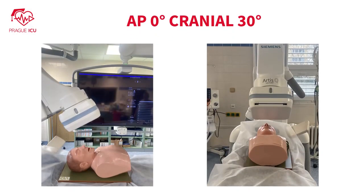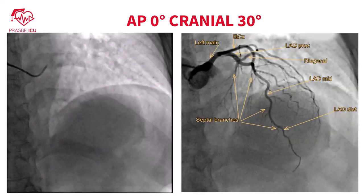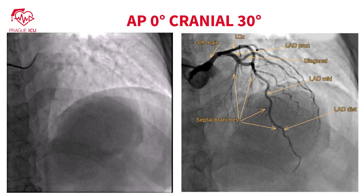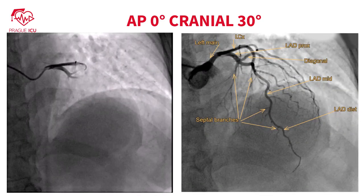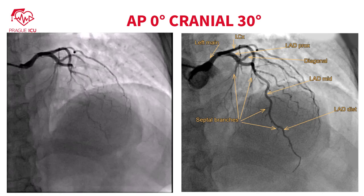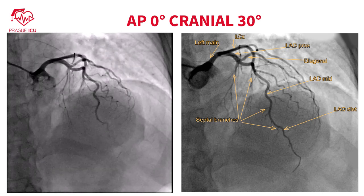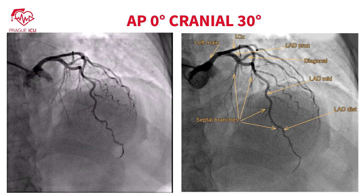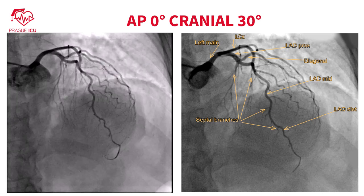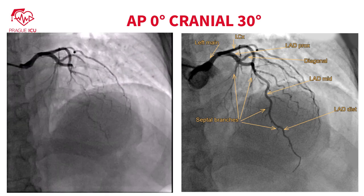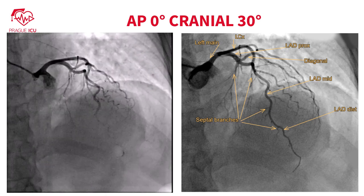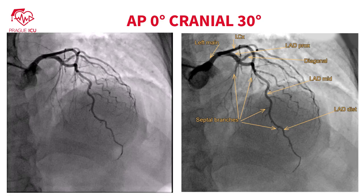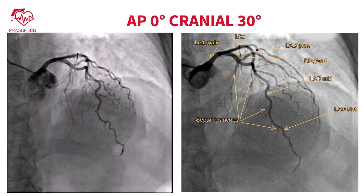AP 0 degrees cranial 30 degrees view is best for visualizing the distal part of the left main and ostium of the LAD. In major cases, the LAD goes in parallel to the spine. Diagonal branches go in the direction of obtuse marginal branches.